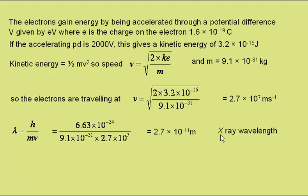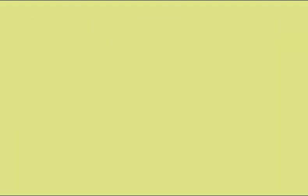As the PD was increased, the rings became smaller, as would be expected if the wavelength was getting smaller. This is the same as we see with diffraction of light or with water waves. The electrons were behaving as waves.